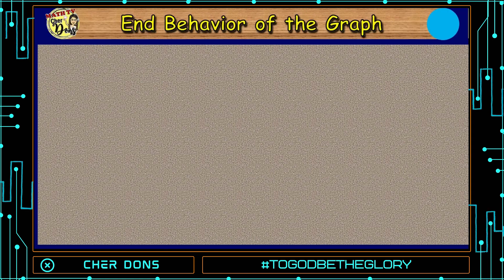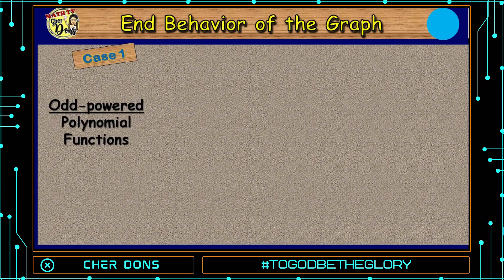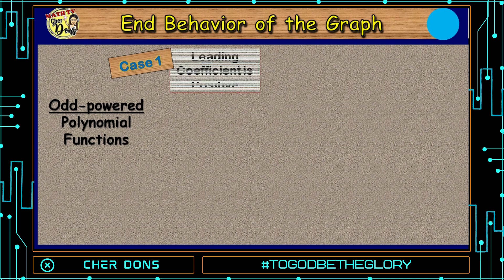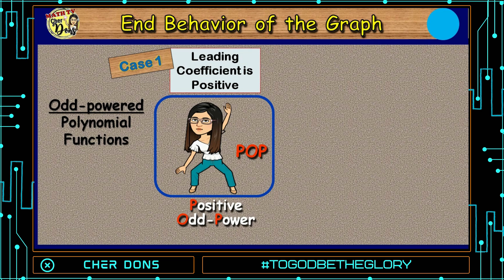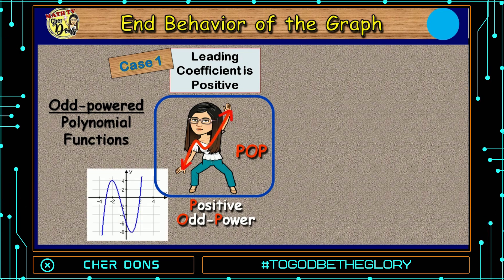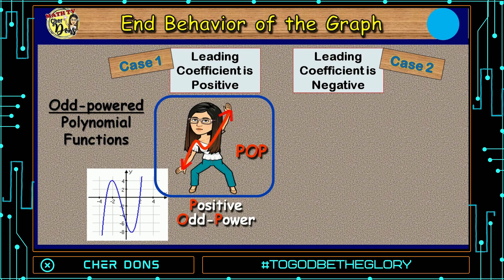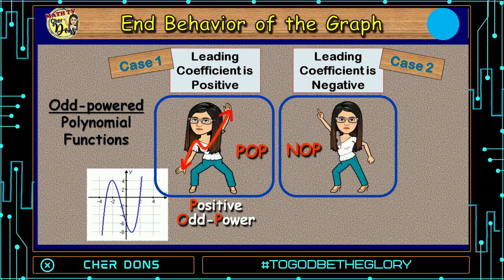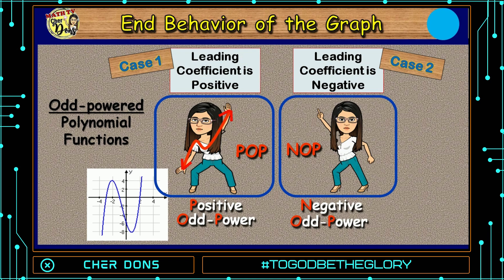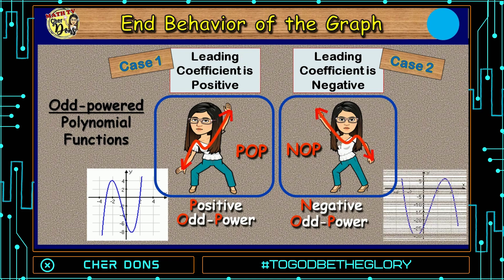The end behavior of the graph has 4 cases. For cases number 1 and 2, it's an odd-powered polynomial function. For case number 1, the leading coefficient is positive — we call it POP, which stands for positive odd power. The graph falls to the left and rises to the right. Case number 2: the leading coefficient is negative, and it has an odd power — let's call it NAP, negative odd power. The graph rises to the left and falls to the right.